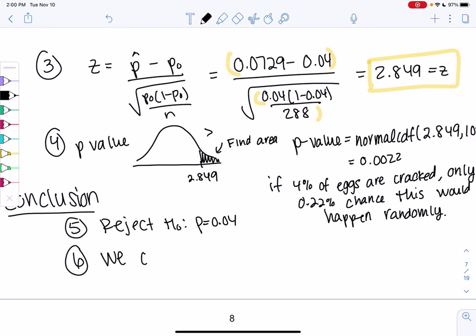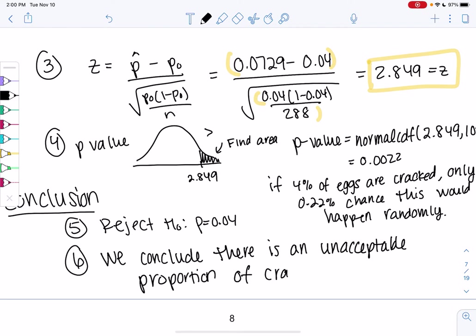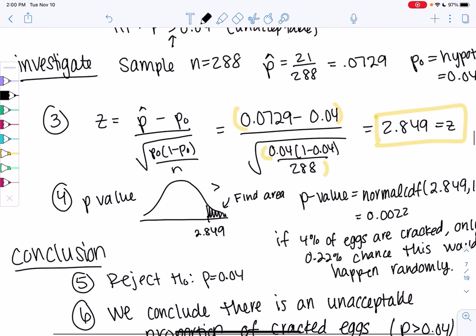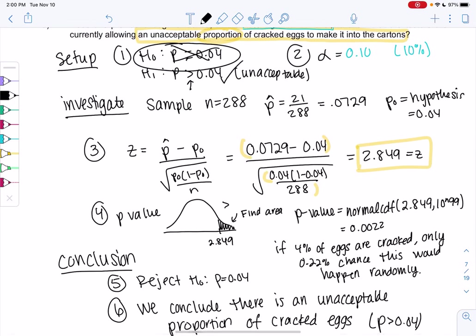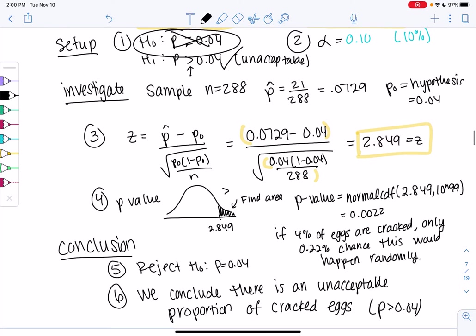We reject H0, which means we're rejecting that P equals 0.04. By rejecting that, we're saying that they are letting in too many cracked eggs. We conclude there is an unacceptable amount of cracked eggs. We're rejecting that it equals 0.04, so it must be greater than 0.04, which is unacceptable. Rejecting means we're saying this first one is not true, so the second one must be true. And that's a hypothesis test.